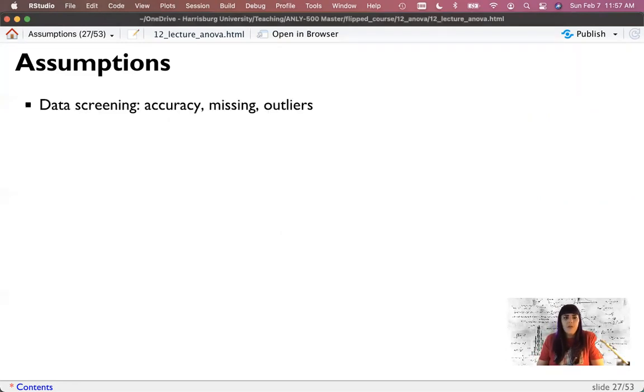So first with our assumptions. The first assumption is still to deal with data screening - accuracy, missing, and outliers. Generally, missing data will be excluded because you only have one dependent variable, and outliers will be calculated with Z-score, because we only have one dependent variable, and Mahalanobis only works on multiple columns.